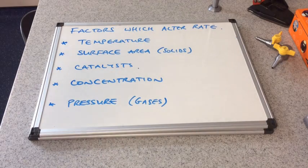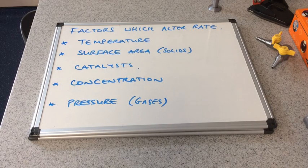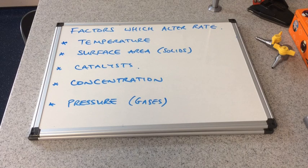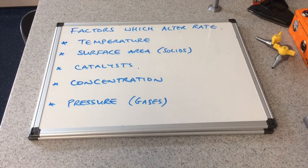We're going to look at the factors which can alter the rate. There are five factors: temperature, surface area (which only applies to solids), catalysts, concentration, and for reactions involving gases, pressure. We're going to take each factor in turn and use collision theory to explain how each one changes the number of successful collisions per second.